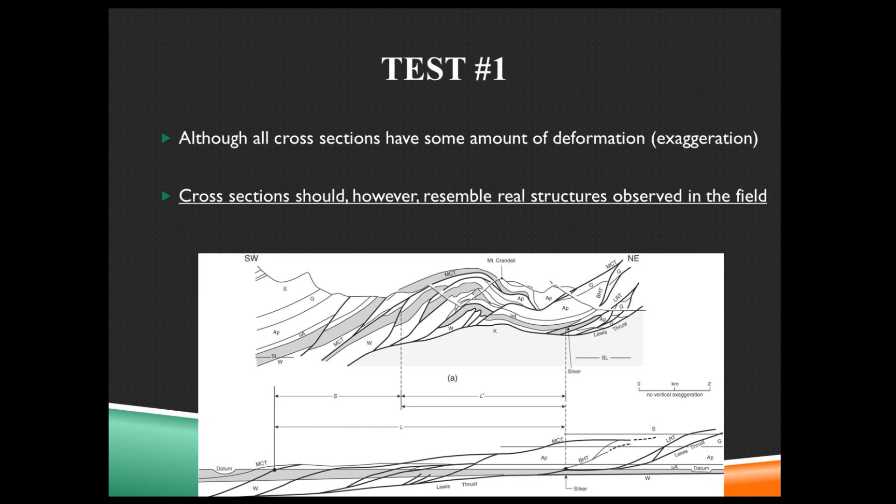The first test is that although cross sections are going to have some amount of exaggeration or deformation, vertical exaggeration, for example, is a large standard type of exaggeration. The cross section should resemble real structures observed in the field. For example, this is labeled Mountain Crandall. It should look like a mountain in your cross section. If it looks like a valley or a flat plain, you're probably not drawing it right.